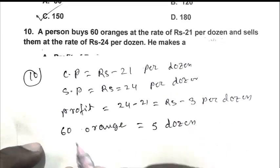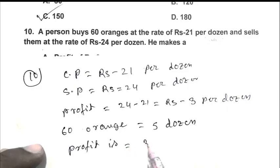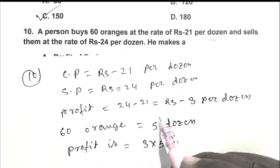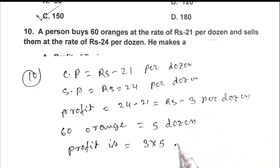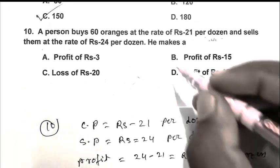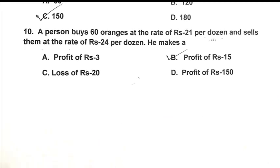So friend 60 orange equal to 5 dozen. So friend he make a profit, so profit is 3 multiplied by 5 because he get a profit 3 per dozen, so rupees 15. So B is the right answer. Thank you for watching, have a good day.